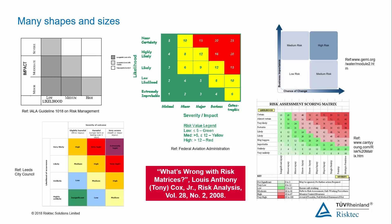In his paper, 'What's Wrong with Risk Matrices,' Tony Cox discusses the problems which may be encountered when using quantitative risk matrices. The paper is available online. Counter-arguments are given in a different paper, 'What's Right with Risk Matrices,' also available online.